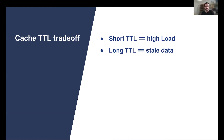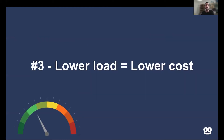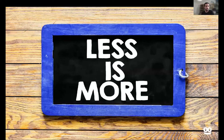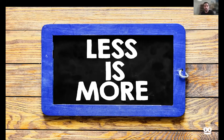That leads to my third and final constraint: the lower the load we generate in the system, the lower the cost we have. If we generate fewer queries, we need fewer database machines and fewer Memcached machines to withstand the same scale. Each front-end service that responds to requests, if it generates less load on the same machine, could withstand many more requests in parallel. There are also lower operating and scaling costs due to network and licensing requirements.